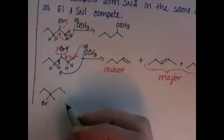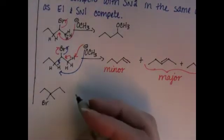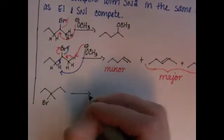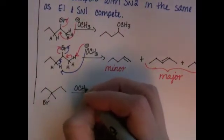So we have here a 3-bromo-3-methylpentane, and we're going to react it with a strong nucleophile.